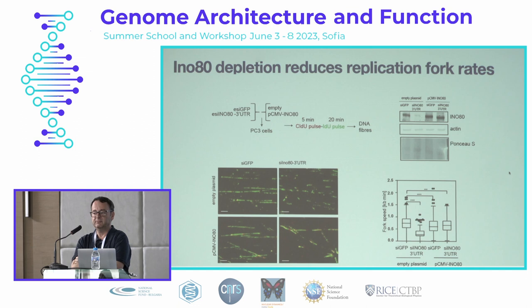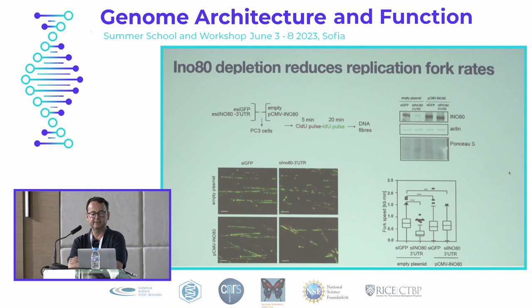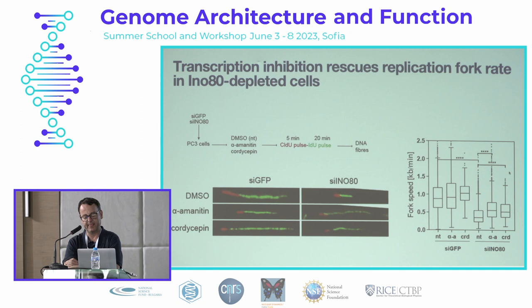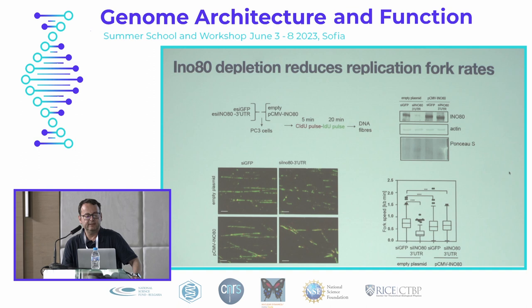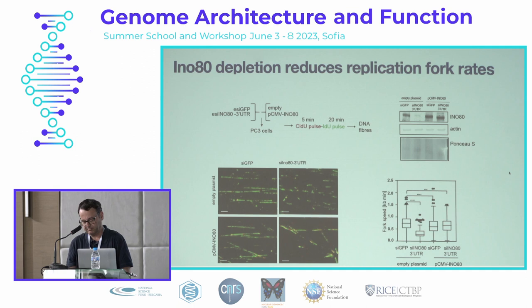Filippo Paseo introduced the DNA fiber labeling technique yesterday, but I'll briefly reiterate: these images are basically nascent DNA stretched on a glass surface, sourced from cells labeled for a fixed amount of time with halogenated nucleotides, which allows their immunostaining. Since labeling is done for a fixed amount of time, the length of the fiber is proportionate to the speed of the replication forks. On this slide you see DNA fibers in cells silenced for INO80, with and without overexpression of an siRNA-immune form of INO80.